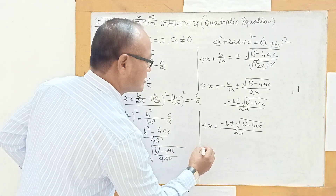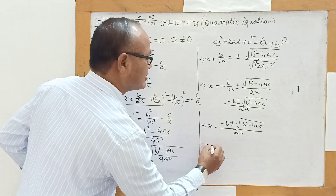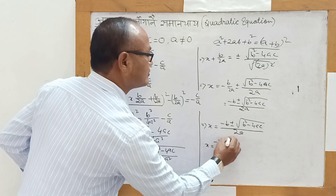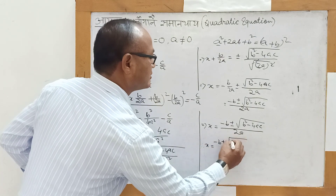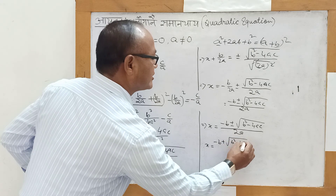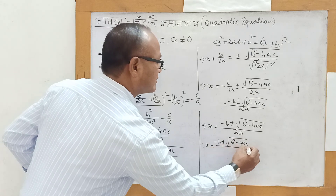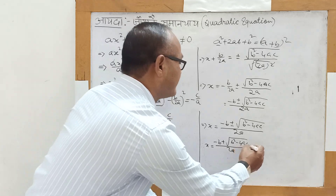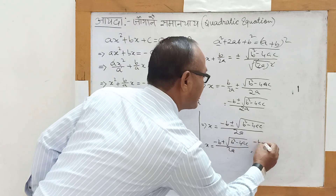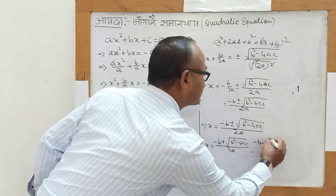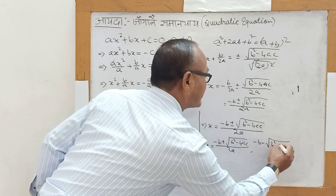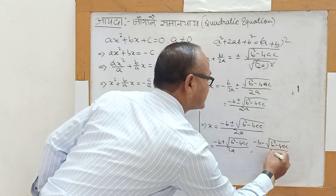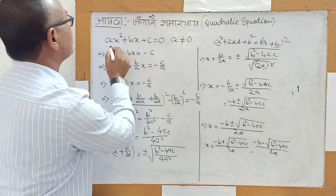Therefore, x is equal to minus b plus square root of b squared minus 4ac, divided by 2a. Or x is equal to minus b minus square root of b squared minus 4ac, divided by 2a.